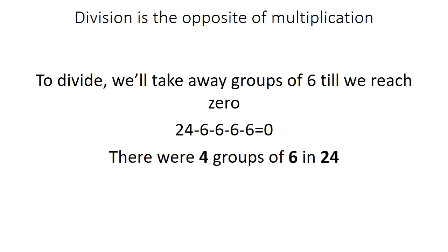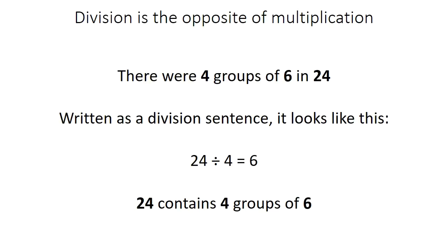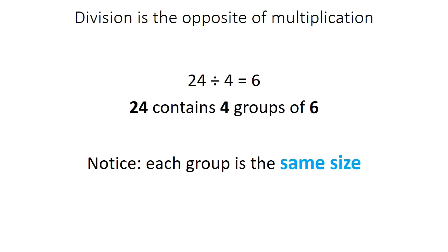We subtracted 4 groups of 6 from 24 in order to reach 0. Written as a division sentence, it looks like this: 24 divided by 4 equals 6. 24 contains 4 groups of 6. Notice that each group is the same size. This is very important.